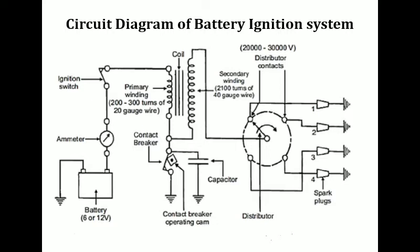The ballast resistor is made of iron metal. When the temperature increases, in the case of iron metal, it also increases the resistance. When the resistance is increased, according to Ohm's law, the voltage or current regulation will be reduced. There are two types of windings: the primary winding and the secondary winding. In the case of the primary winding, 200 to 300 turns are used.